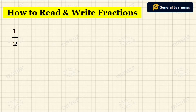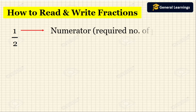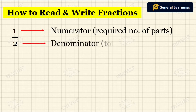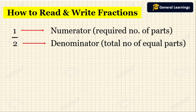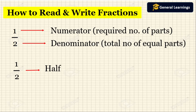Now we are going to see how to read and write fractions. The fraction 1 by 2: the top number, 1, is called the numerator — that is the required number of parts. The bottom number, 2, is called the denominator — that is the total number of equal parts. We read 1 by 2 as one half.